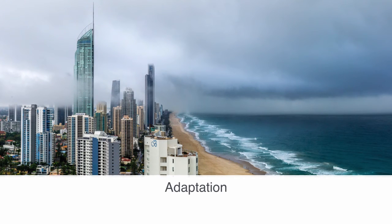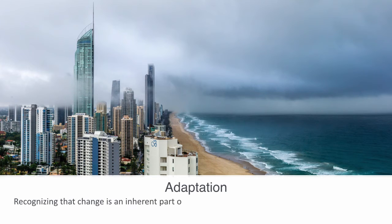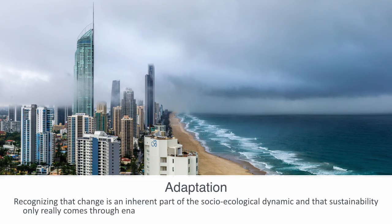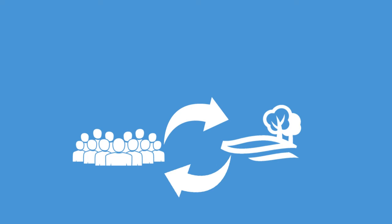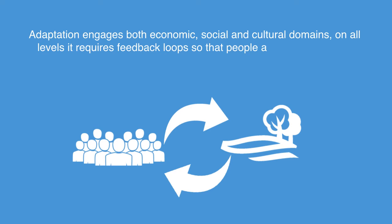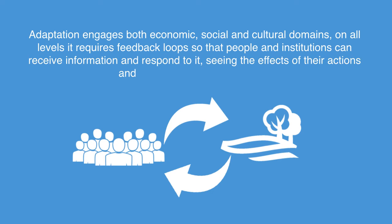But of course sustainability is much more than just technology, demographics, and natural resource supply. Just as important as the basic physical mechanics is a society's capacity to adapt and evolve in response to changes. From this perspective, sustainability is not so much about trying to make everything add up — reducing ecological footprint or making technology more efficient — but instead recognizing that change is an inherent part of the socio-ecological dynamic. Long-term sustainability only really comes through enabling an effective adaptive mechanism within the social system, so it can evolve in response to changes in the ecosystem and endure over time. Adaptation engages economic, social, and cultural dimensions at all levels, and requires feedback loops so that people and institutions can receive information, respond to it, and see the effect of their actions on the state of the environment.